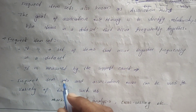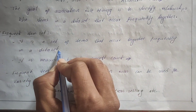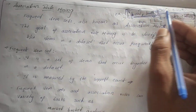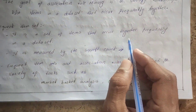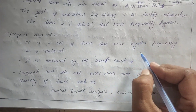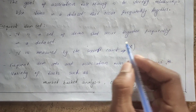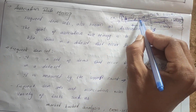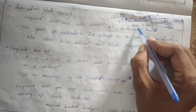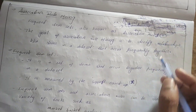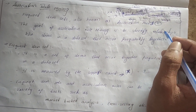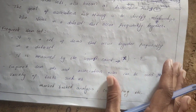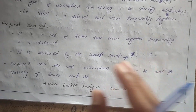Frequent item sets are sets of items that occur together frequently in a dataset, like bread and butter, bread and milk, or bread, butter, and milk together. It is measured by support count — denoted as support(X). For example, if bread and butter occur in the first transaction and also in the second transaction, the support count is two; if repeated in a third transaction, it becomes three.